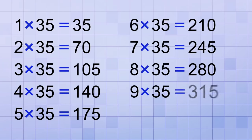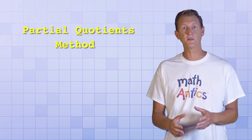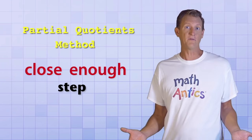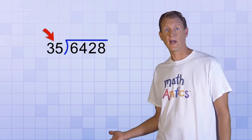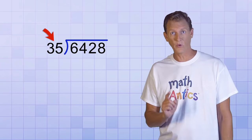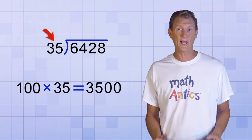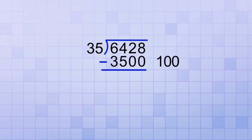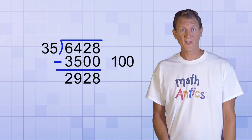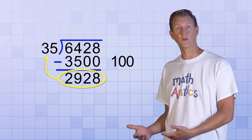Should we calculate all the multiples of 35 that we might need ahead of time? With the partial quotients method, we won't need to, because that method lets us just pick an answer that we think will be close enough for each step, and then do more steps as needed to adjust as we go along. For example, I have no idea exactly how many times 35 will go into 6,428, but I do know it will go in at least 100 because 100 times 35 equals 3,500. So I'm going to choose that as my first partial answer. I'll write 100 off to the side, and since 100 times 35 equals 3,500, I'll subtract that from 6,428 to get a remainder of 2,928.